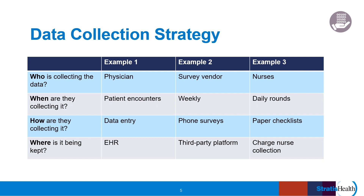The frequency with which you collect data, how much you collect at each period, and for how many periods will all determine how much data you may end up with. It can be difficult to know how much data you will need overall and at each point in time. You will need to balance the need for enough data to identify a change in your process with the reality that there are limited resources for collecting data in terms of staff time and effort. You can conduct trial runs for a few time periods to see what kind of data you are getting, how much data, and if there are any barriers or circumstances to collecting the data that you had not anticipated.